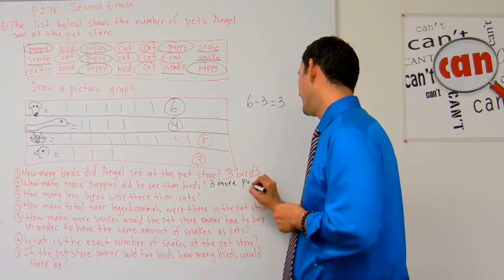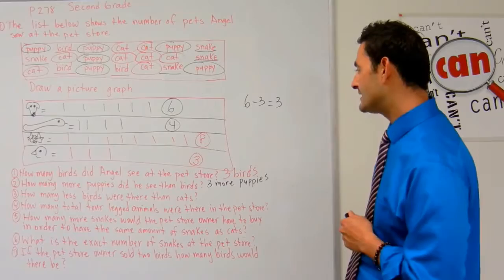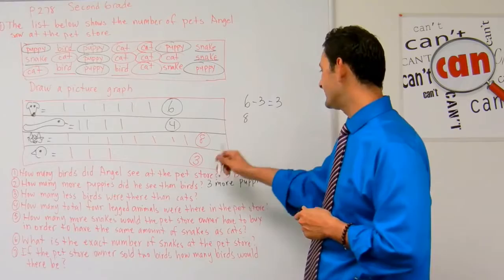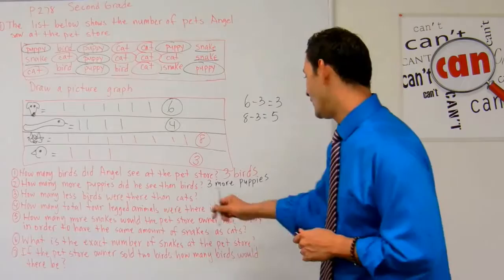Number three reads: how many less birds were there than cats? There were eight cats and three birds. Eight minus three equals five, so he saw five more cats than birds.